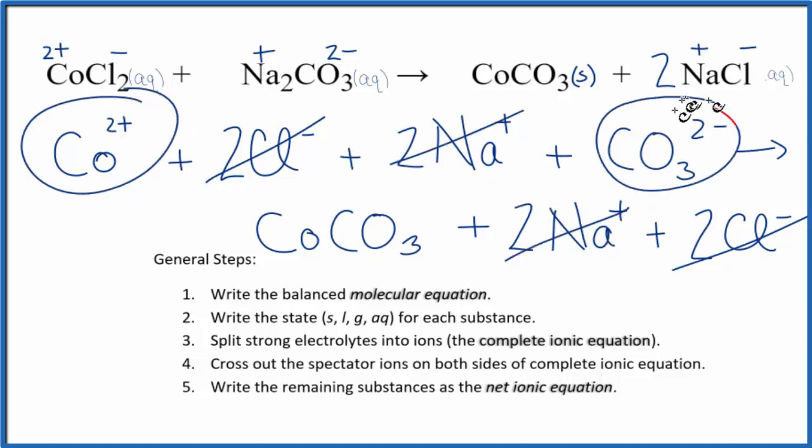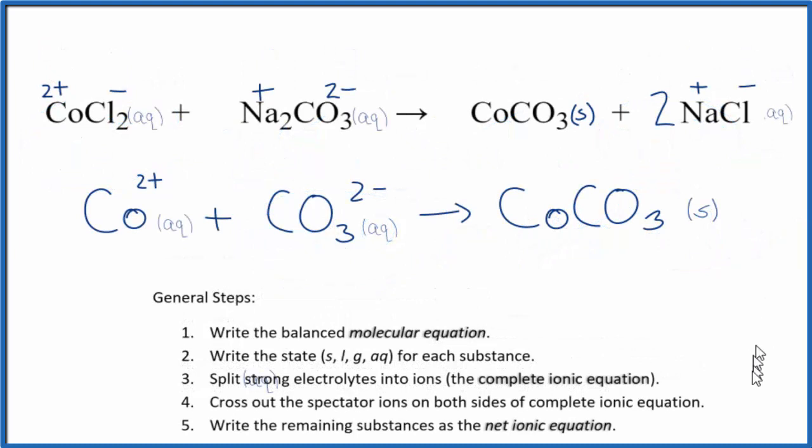What's left make up the net ionic equation. So let me clean this up and add the states in, and we'll have the net ionic equation for CoCl2 plus Na2CO3. So that's the net ionic equation for cobalt(II) chloride plus sodium carbonate.